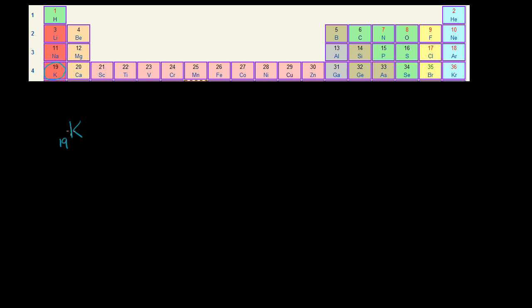Not all atoms of a given element have the same number of neutrons. When we talk about a given element but with different numbers of neutrons, we call them isotopes of that element. For example, potassium can come in a form that has exactly 20 neutrons, and we call that potassium-39. The 39 is the mass number — a count of the 19 protons plus 20 neutrons. This is actually the most common isotope of potassium, accounting for 93.3% of the potassium found on Earth.